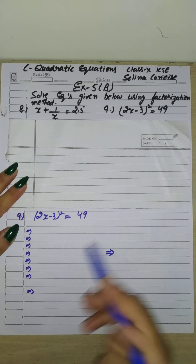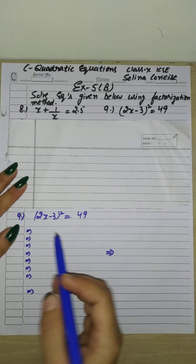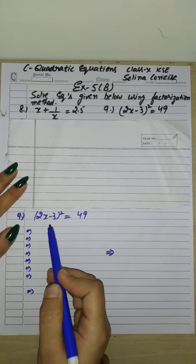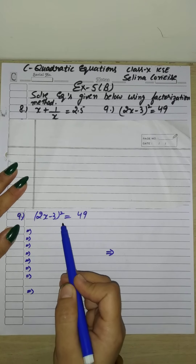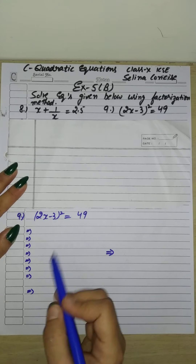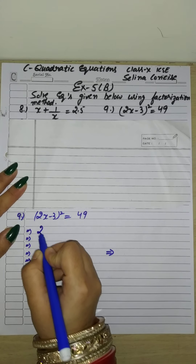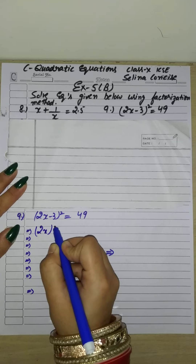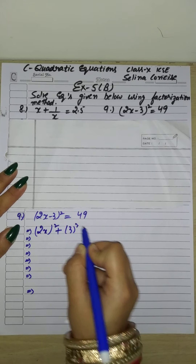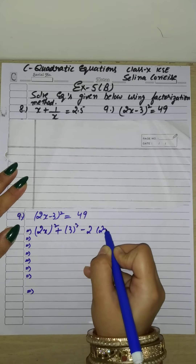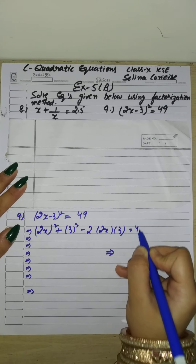First of all, we need to simplify it. We need to open the whole square here: (2x − 3)². That means we apply the formula a minus b whole square, which is a² + b² − 2ab, and set it equal to 49.